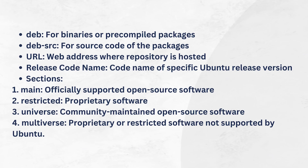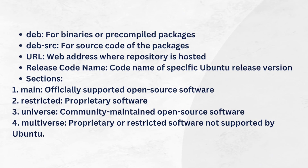Ubuntu repositories are divided into four main sections. First, Main, which contains officially supported open source software maintained by the Ubuntu community. Second, Restricted, which includes proprietary software supported by Ubuntu but not open source. Third, Universe, comprising community-maintained open source software. Lastly, Multiverse, which contains proprietary or restricted software not supported by Ubuntu.